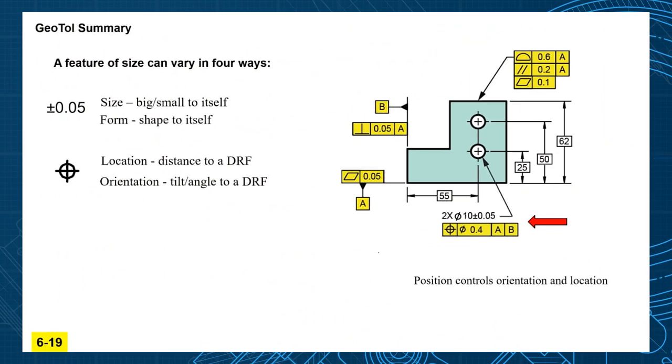Now features of size are slightly different. They're going to have two controls on them both the size tolerance and the position tolerance. So our plus or minus 0.05 on that hole that controls both the size and the form. How big and small it is and it also controls the shape. So now we need to relate where that feature is to the rest of the part. So we use position tolerance to do that and we've learned in this lesson that location controls where the hole is but it also controls orientation.